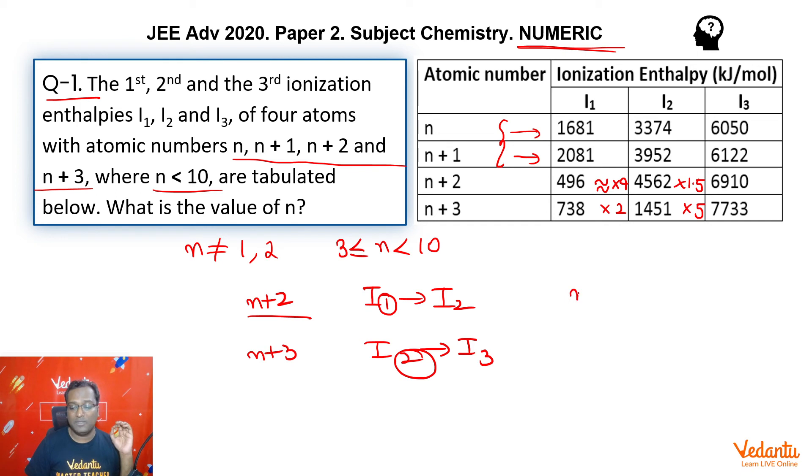Now, this makes it very clear that n plus 2 is 11, that is sodium. Because in our range, this gives us n equal to 9. Similarly, here we can see that n plus 3, we need to remove 2 electrons easily. So that is magnesium 12. This also gives us n equal to 9.